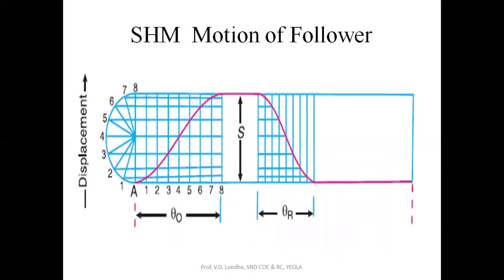The next is SHM — simple harmonic motion — of the follower. Here, theta-O represents the angle of rise, followed by the dwell part, then theta-R is the angle of return or angle of descent, and the remaining part is the dwell where the follower is stationary. For SHM, you draw one semicircle toward the y-axis whose radius is half the displacement — meaning the diameter equals the total displacement.